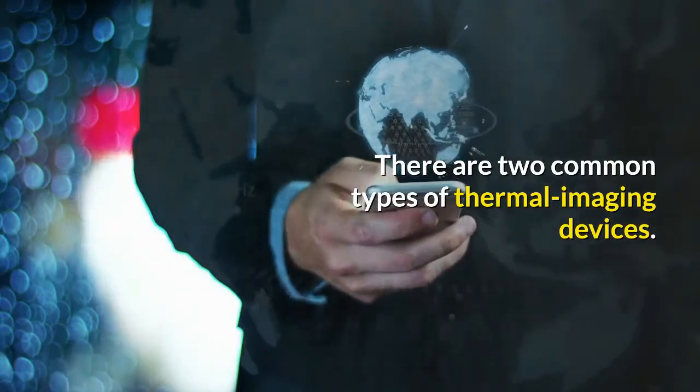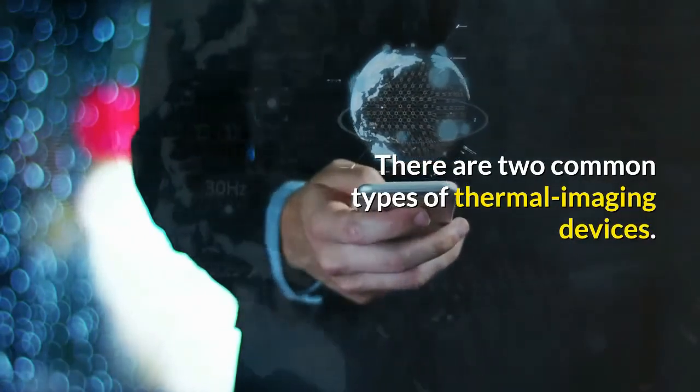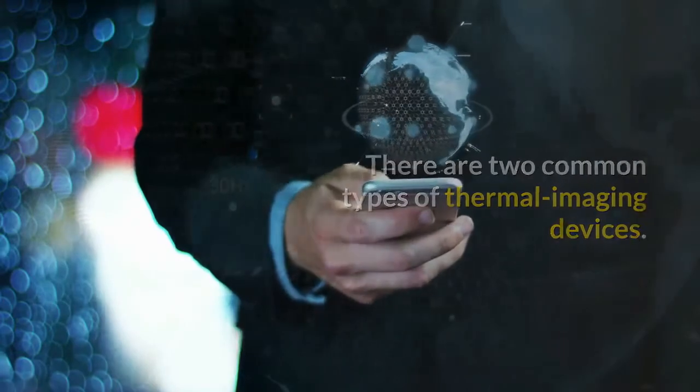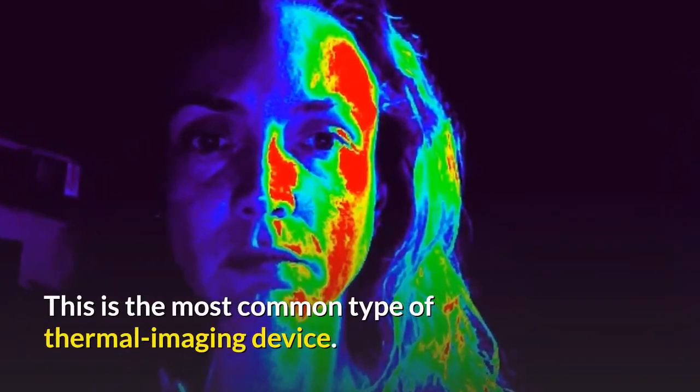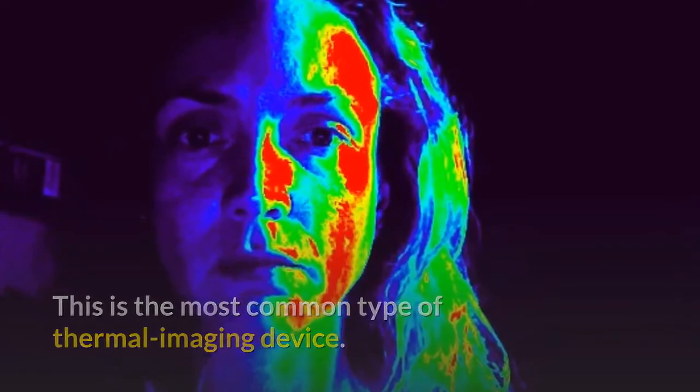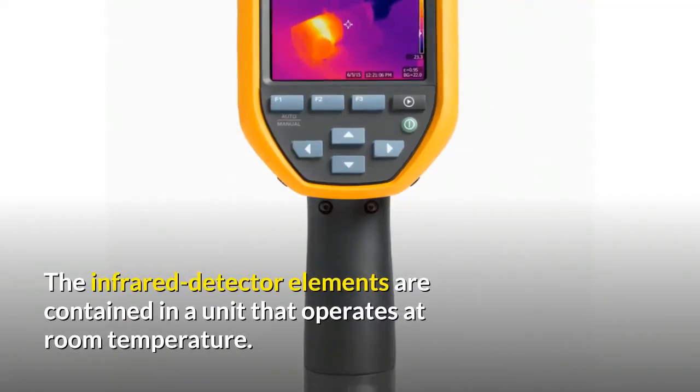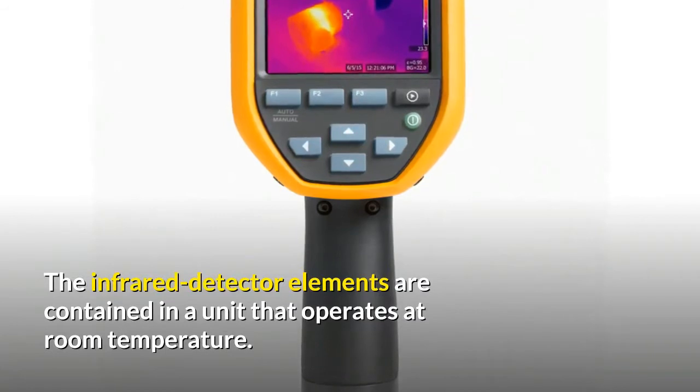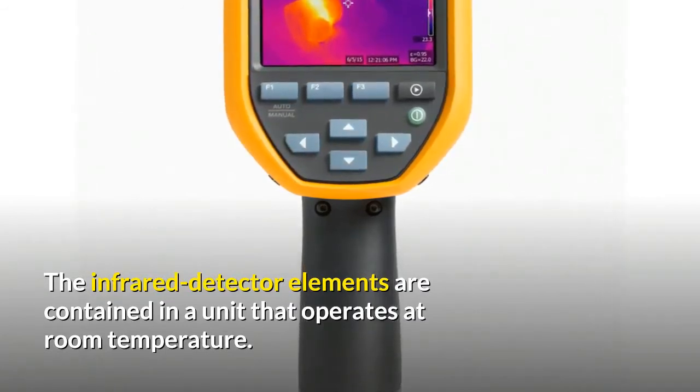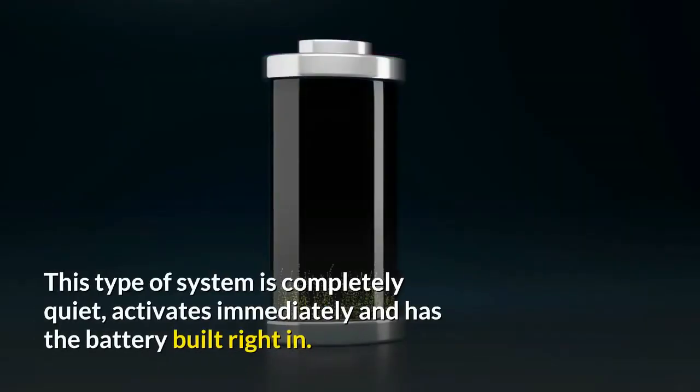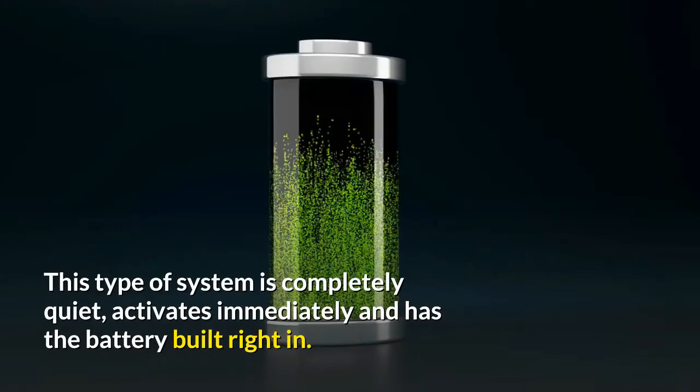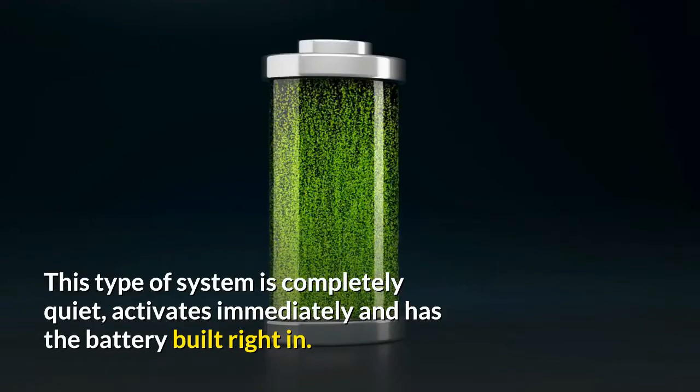There are two common types of thermal imaging devices. Uncooled: this is the most common type of thermal imaging device. The infrared detector elements are contained in a unit that operates at room temperature. This type of system is completely quiet, activates immediately, and has the battery built right in.